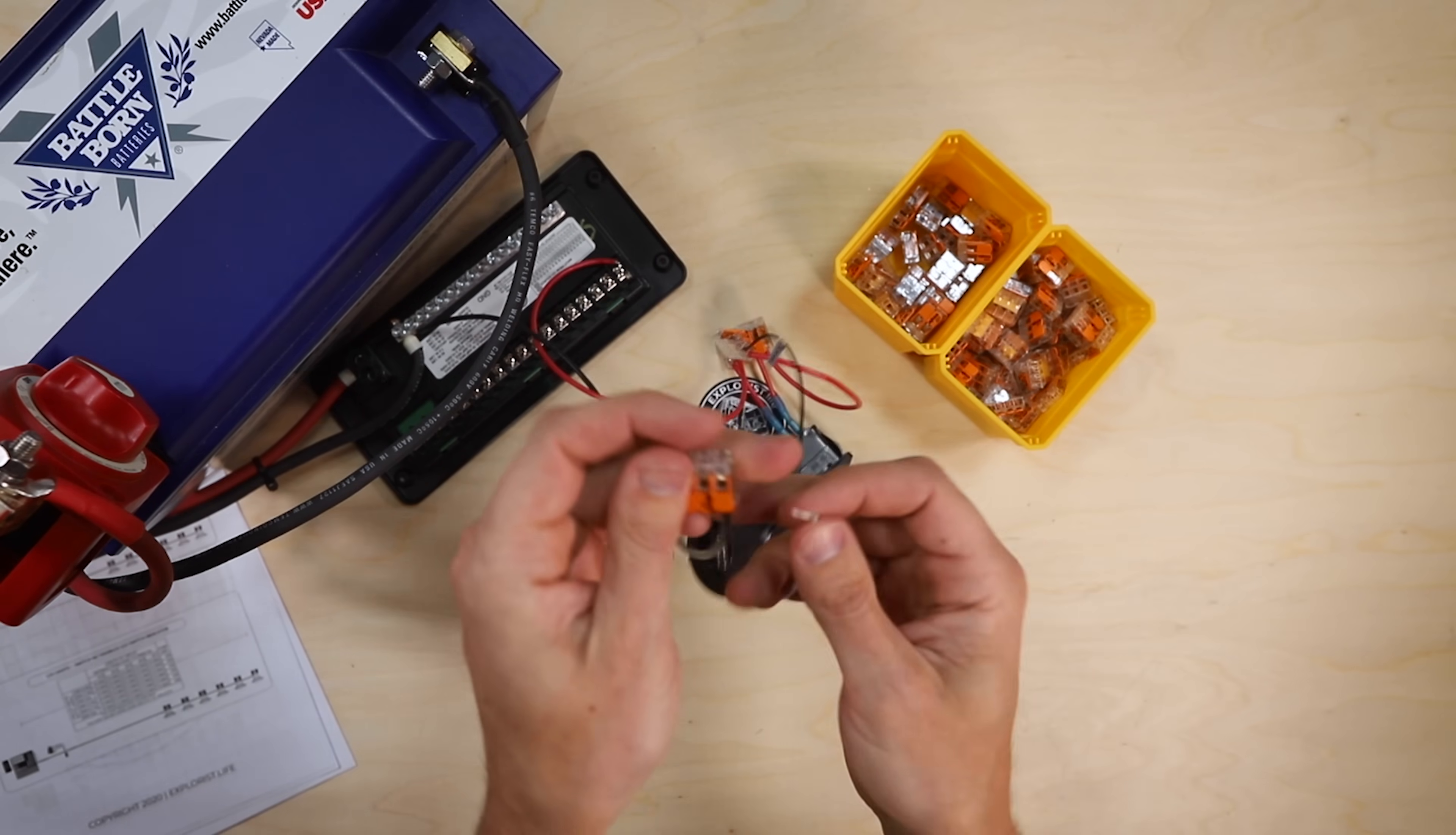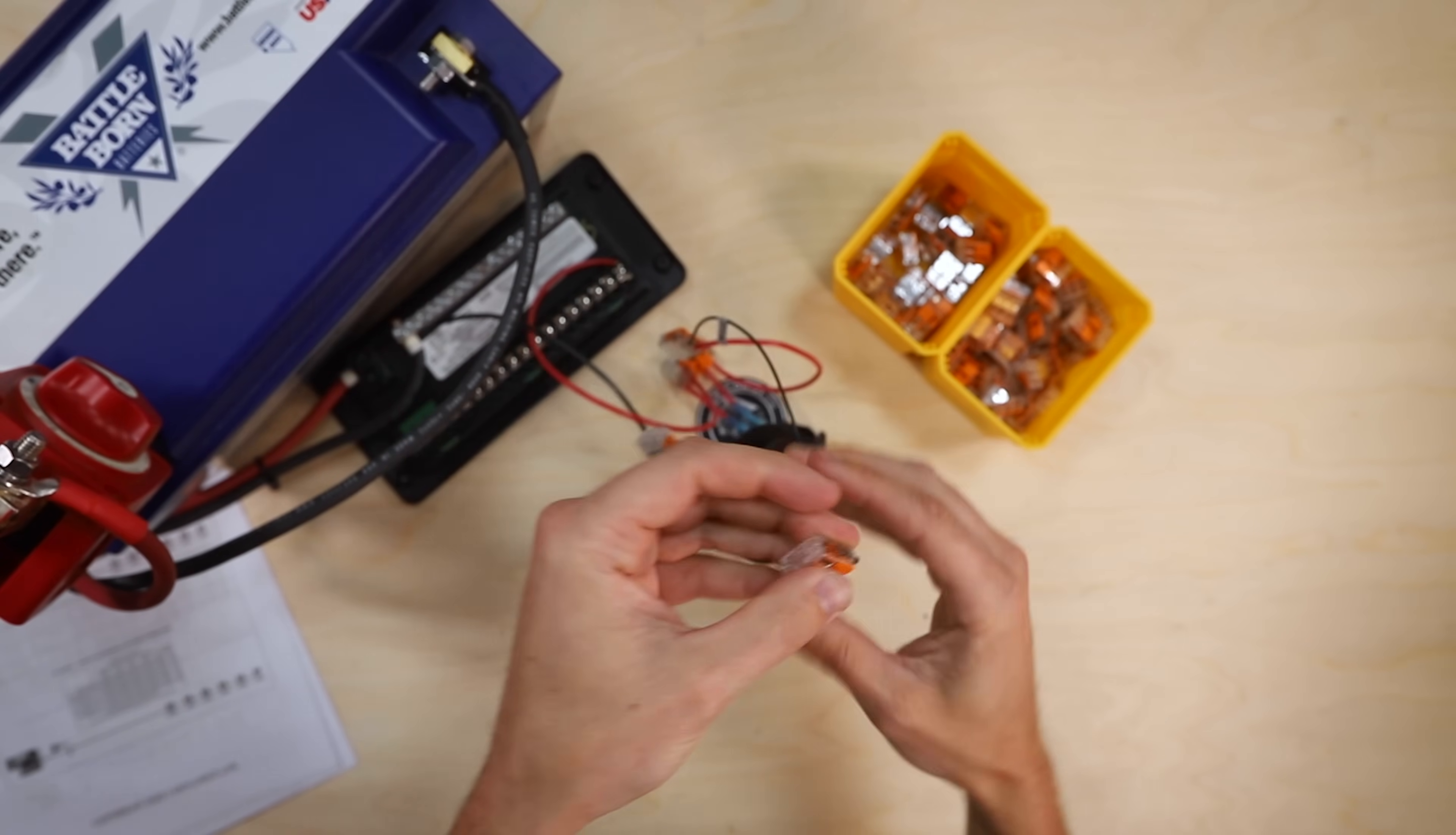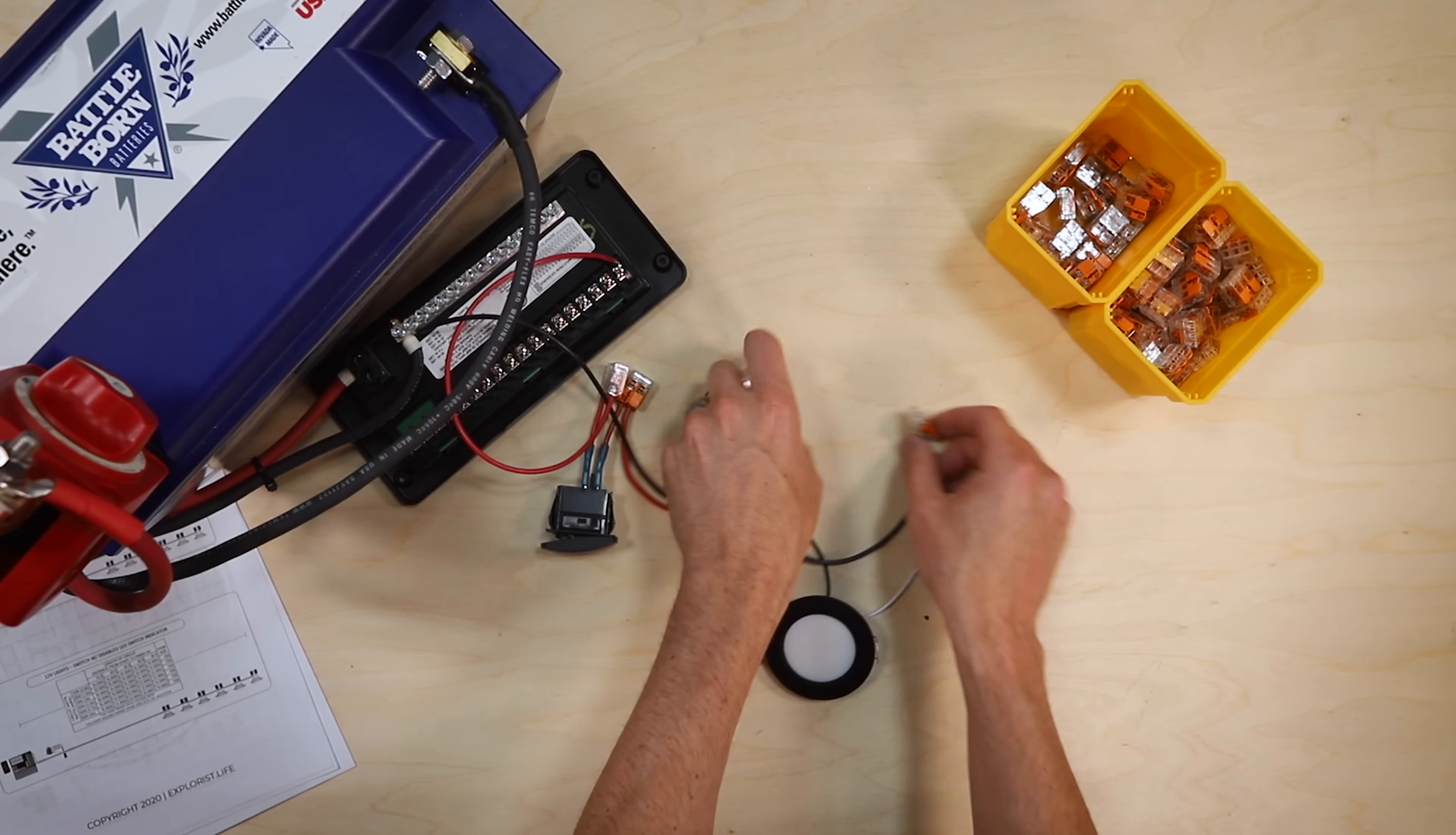Into that lever nut, and the negative one, which is white on this particular light, into the negative lever nut. And so effectively this would be on the wall and this would be up on the ceiling and we would have one light on the ceiling.